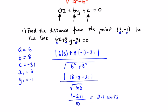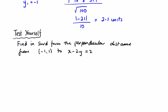Pause the video and test yourself on this one. You're asked to find, in surd form, the perpendicular distance from (−1, 1) to x minus 2y equals 2.